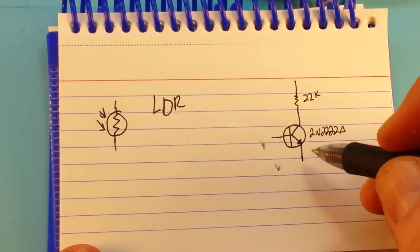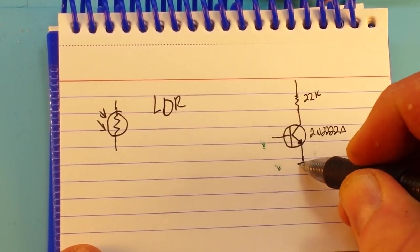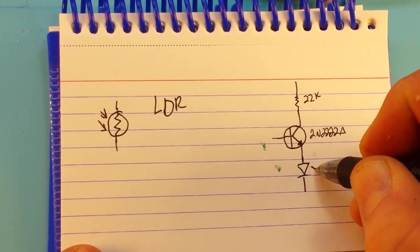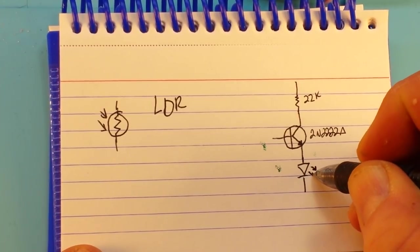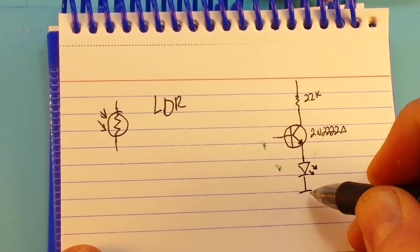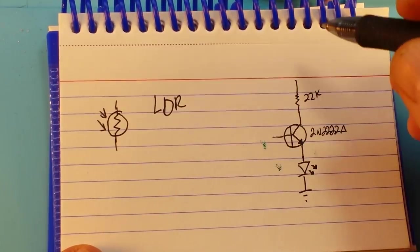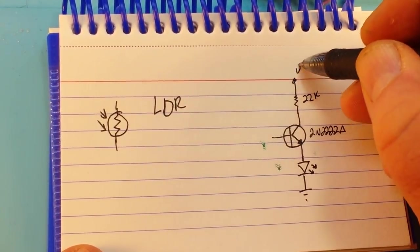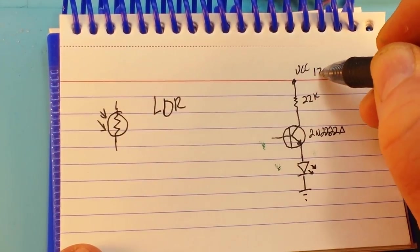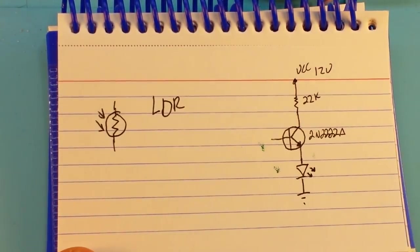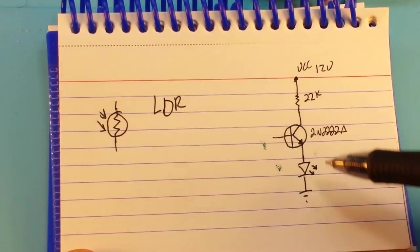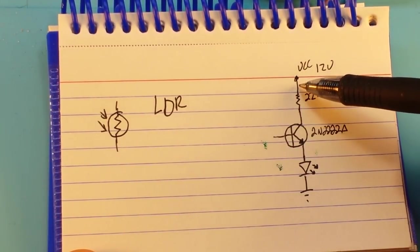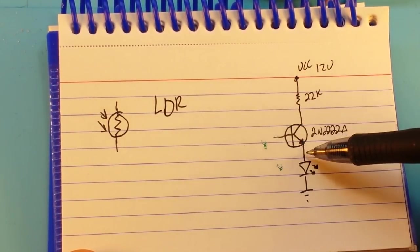And on the emitter, which in this case is going to be our output, I have a white LED and that basically goes to ground. This up here goes to our VCC, which in this case is 12 volts.